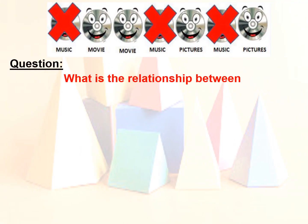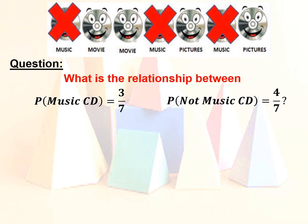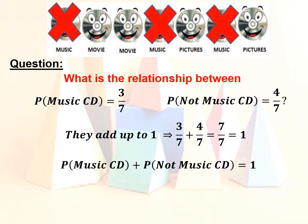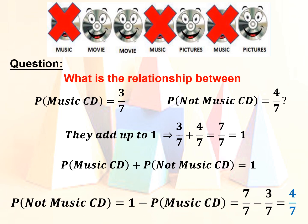What is the relationship between the probability of having a music CD plus the probability of not having a music CD? The answer is they add up to 1: 3 over 7 plus 4 over 7 equals 7 over 7, which is equal to 1. So the probability of having a music CD plus the probability of not having a music CD equals 1. To get the probability of not having a music CD, we transpose the probability of music CD to the other side. So we get: probability of not having a music CD equals 1 minus the probability of having a music CD, which is 7 over 7 minus 3 over 7, equal to 4 over 7.